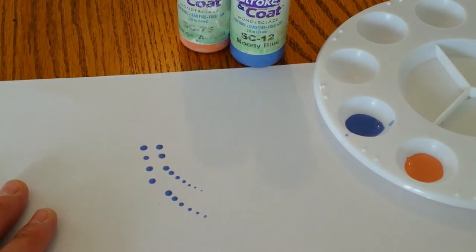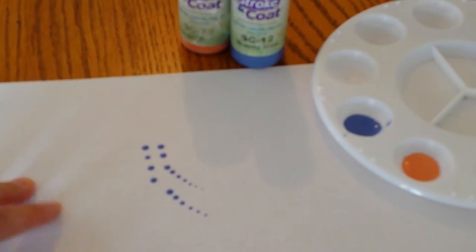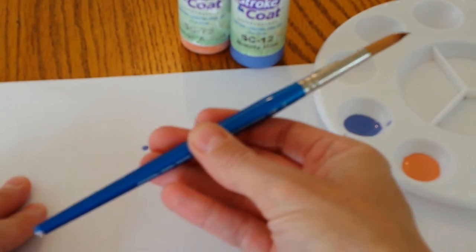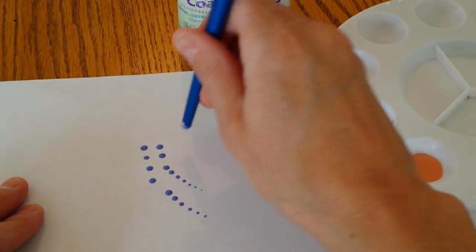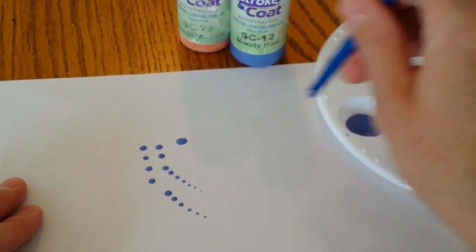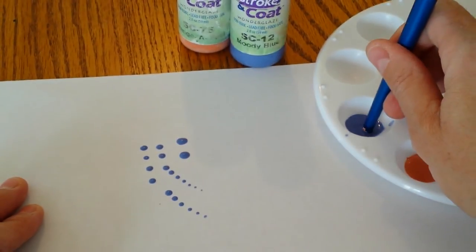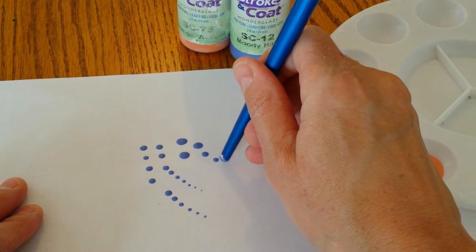And if you want bigger spots, then try and find a slightly bigger paintbrush with a bigger round end. And then we get slightly bigger spots like so, and also have that trailing off effect.